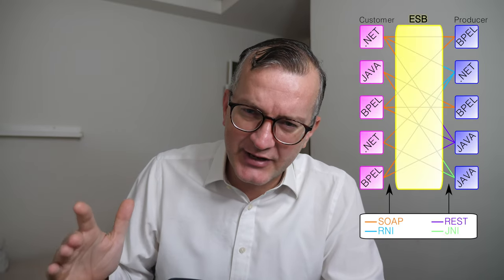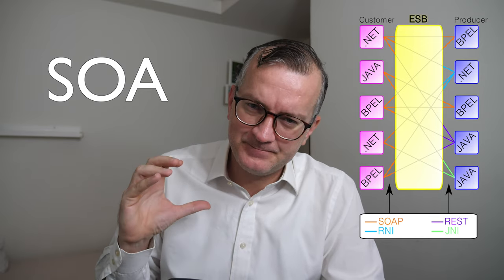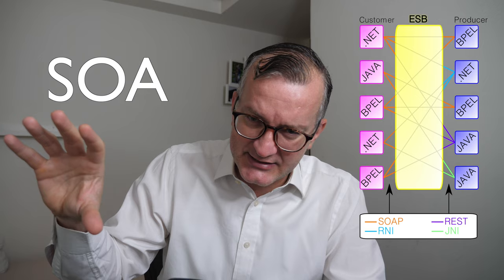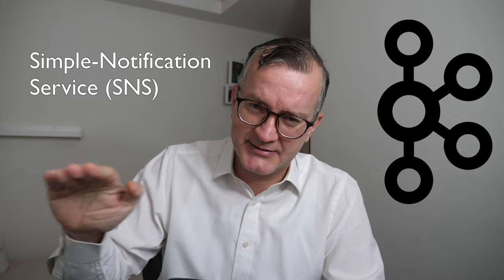Before the hype of microservices and the cloud, in the enterprise world there was this thing called the Enterprise Service Bus, also known as Service-Oriented Architecture. The idea is that you have your message bus — the Enterprise Service Bus — and you can plug in different applications. In the modern-day cloud world, this is like AWS SNS, or if you're doing it yourself, maybe Apache Kafka — a message bus where you put messages on and different services can listen.